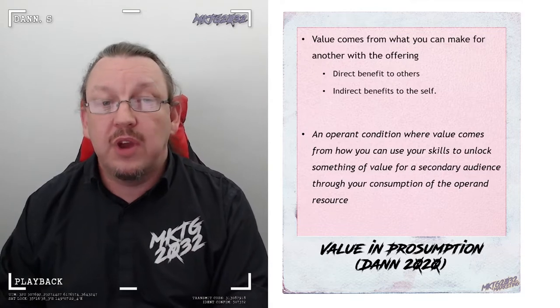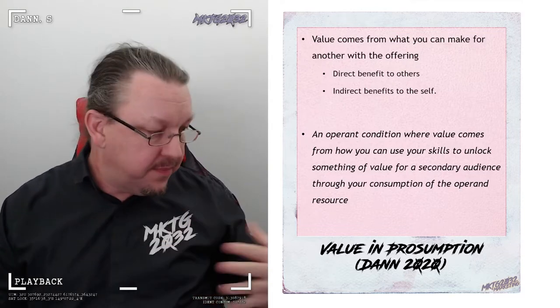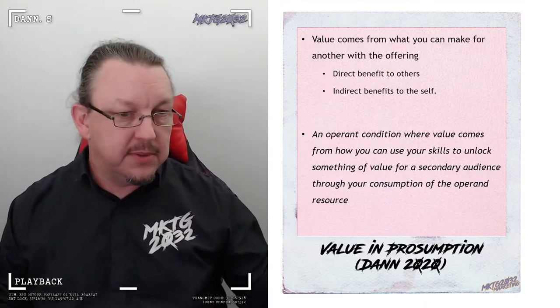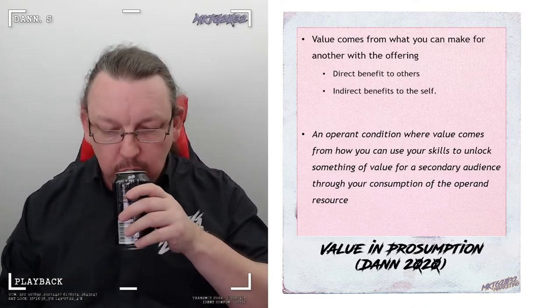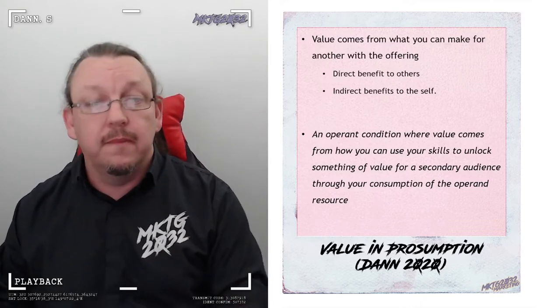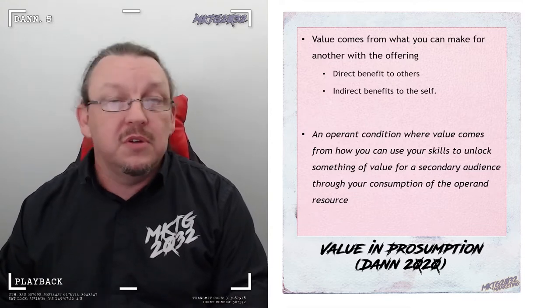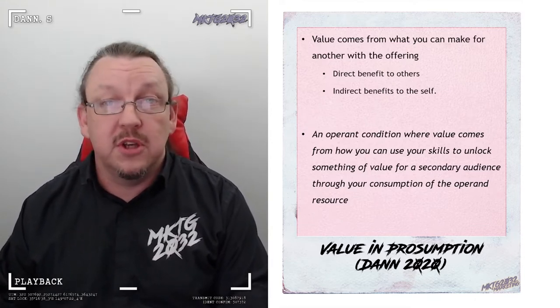So in essence, value and prosumption is everything I've read about the internet, everything I've experienced about the internet. Those are the operant resources, which I then translate into me telling you this story right now. Key is you're using the consumption pattern to produce content. That's what makes it prosumption. And it is direct benefit to others whilst you personally are gaining from, you know, here's me reviewing a can of pepsi max. I get the caffeine, but you get the review. So the intent and purpose determine what if it's consumption or if it's prosumption.